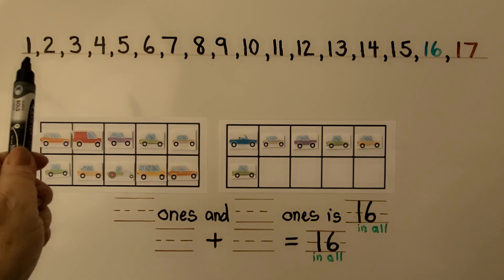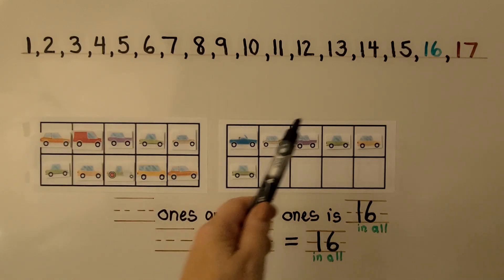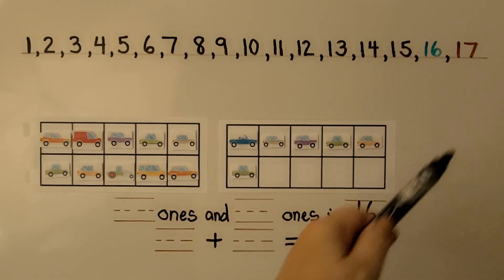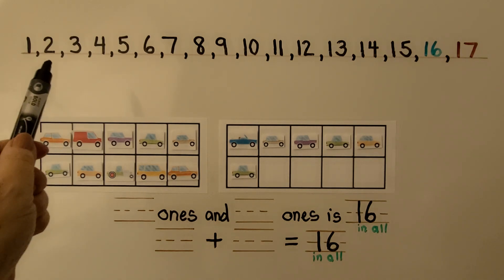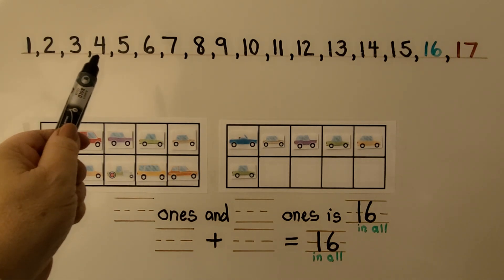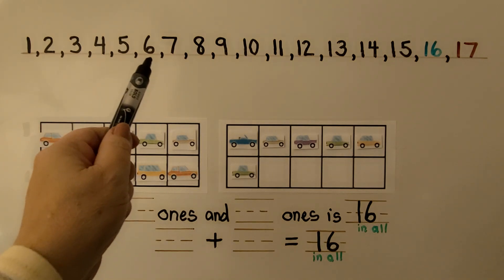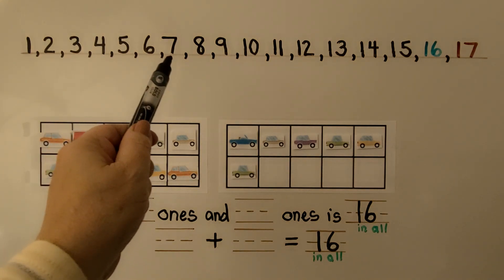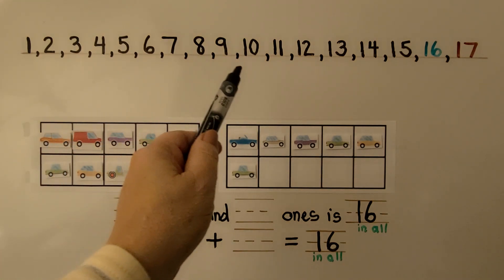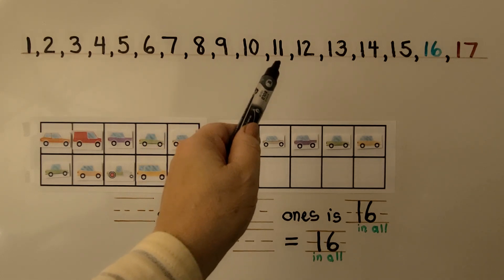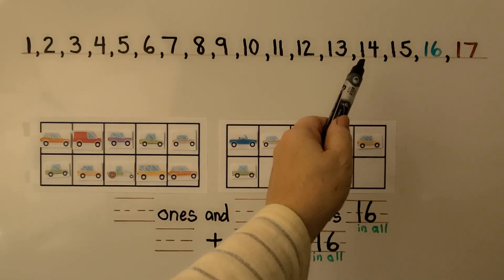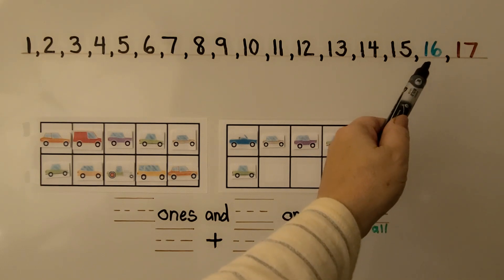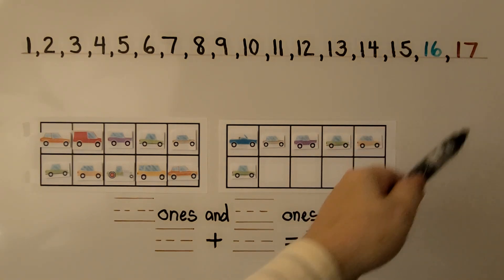Let's count from 1 to 17 in counting order. You can count with me: 1, 2, 3, 4, 5, 6, 7, 8, 9, 10, 11, 12, 13, 14, 15, 16, 17.